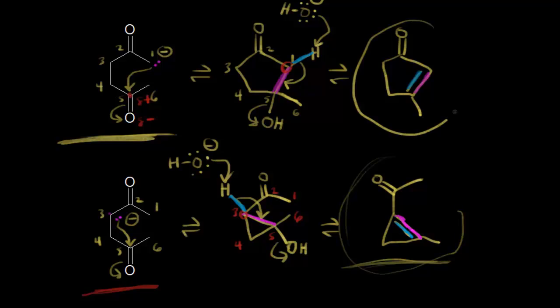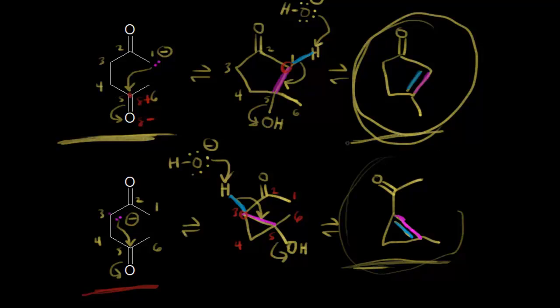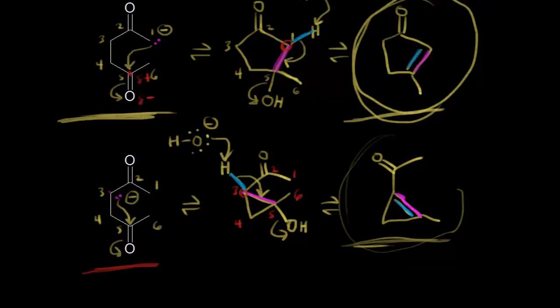This three-membered ring isn't really isolated as your product. Your product is the five-membered ring — there's less angle strain to form it. The five-membered ring is going to be your major product here.